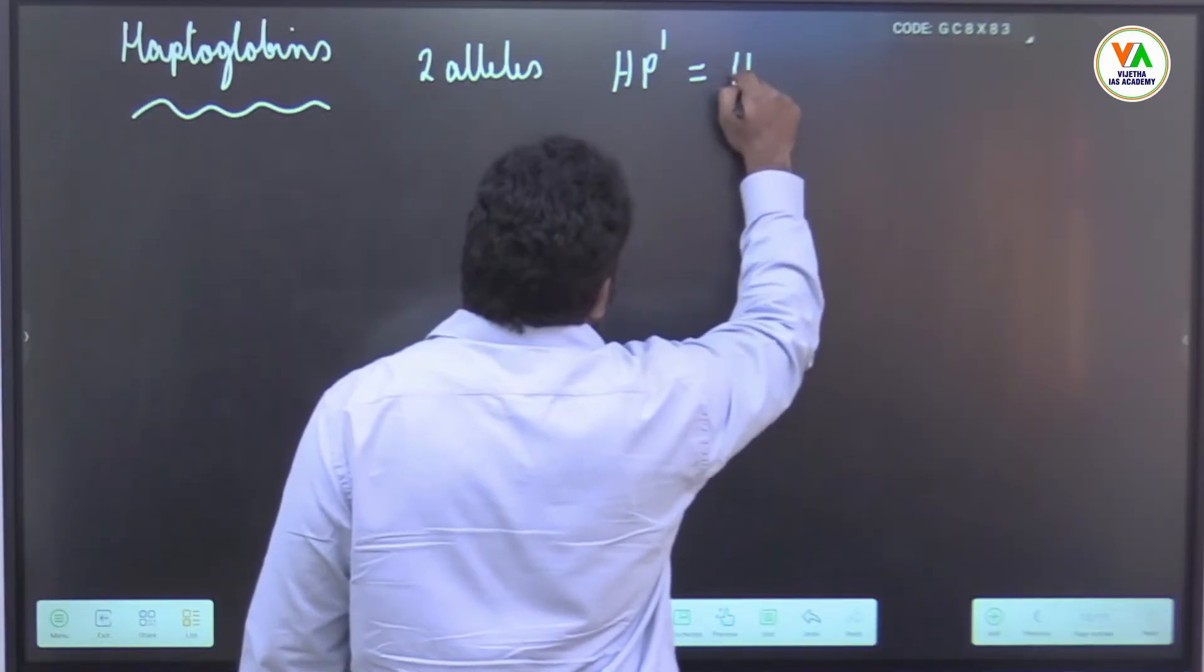Hp1 and Hp2. What is this equal to? Codominance. So how many genotypes are possible? Three genotypes. What are they? Hp1 Hp1, Hp2 Hp1 or Hp1 Hp2, then you have Hp2 Hp2. So what are the phenotypes here? How many phenotypes are there? Codominance. 1,1 type, this is 1,2 type or 2,1 type, and this is 2,2 type. These are three phenotypes.